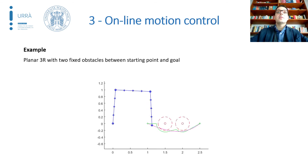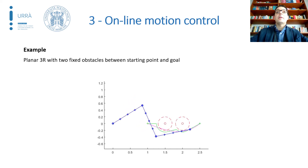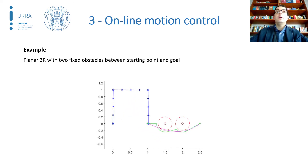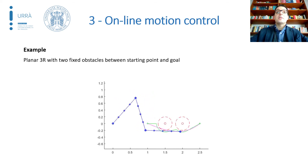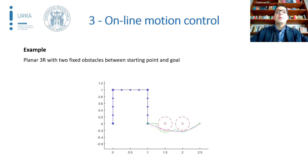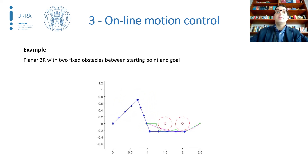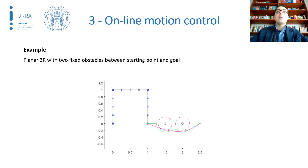Here you can see an example on a simplified case: a planar robot with three revolute joints on a 2D workspace. Two fixed objects are between the starting and the goal points. During the motion, none of the control points of the robot enter the dashed circles that delimit the area of influence of the obstacles.